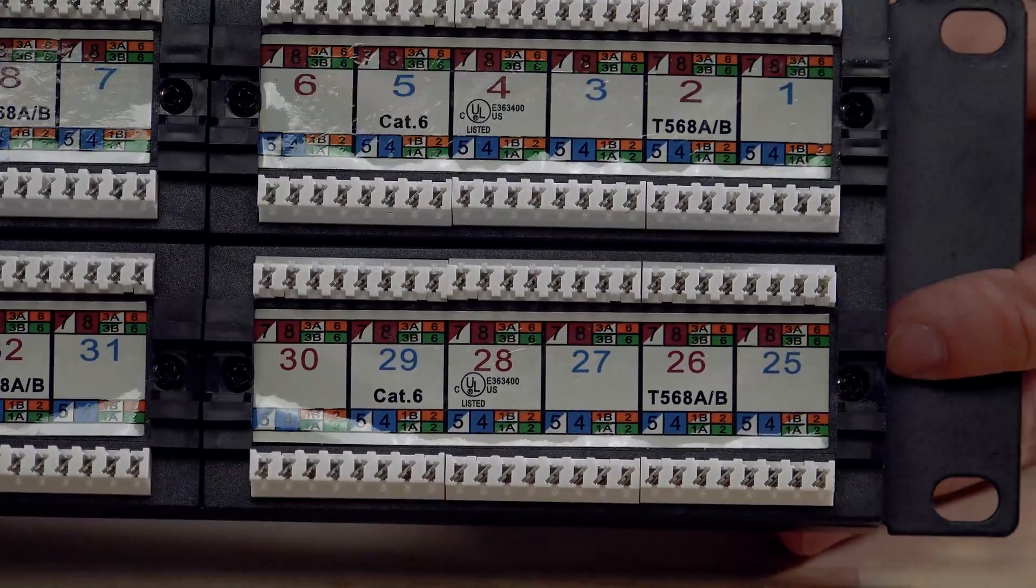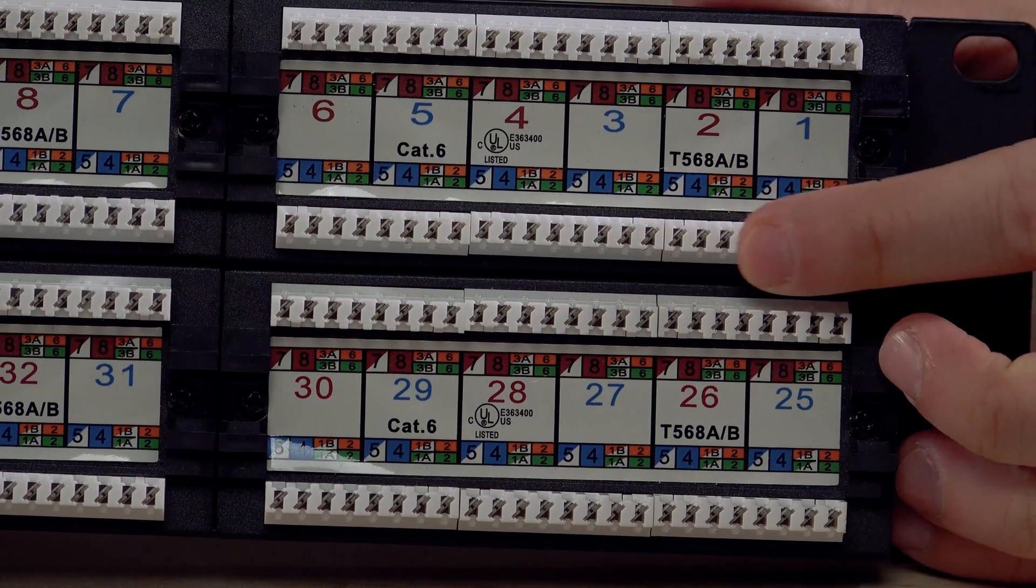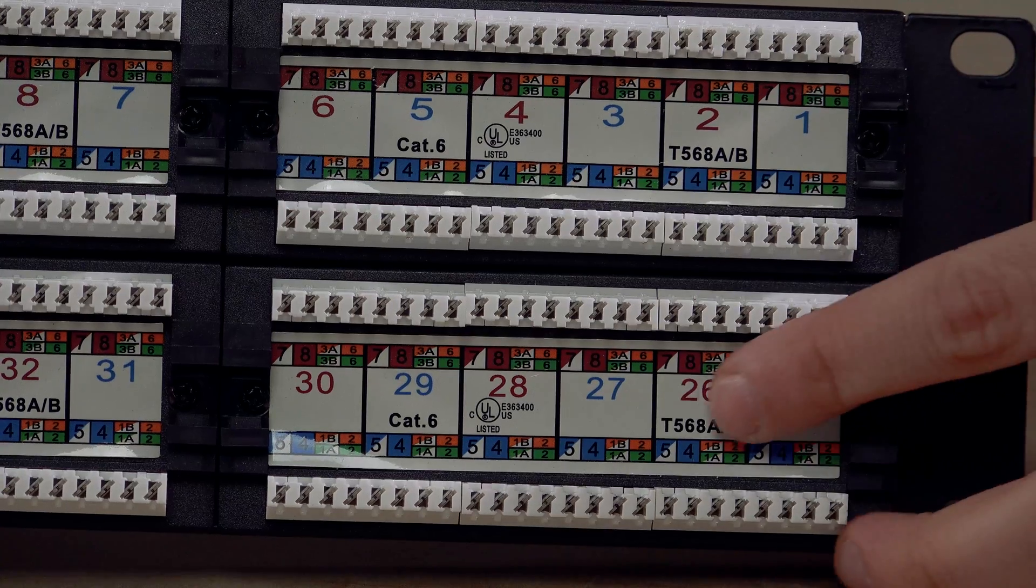Last up is our patch panel. As you can see from this one, 568A and B are both labeled clearly on the back. Follow the wires to each color and you'll be able to tell which wiring is being used.